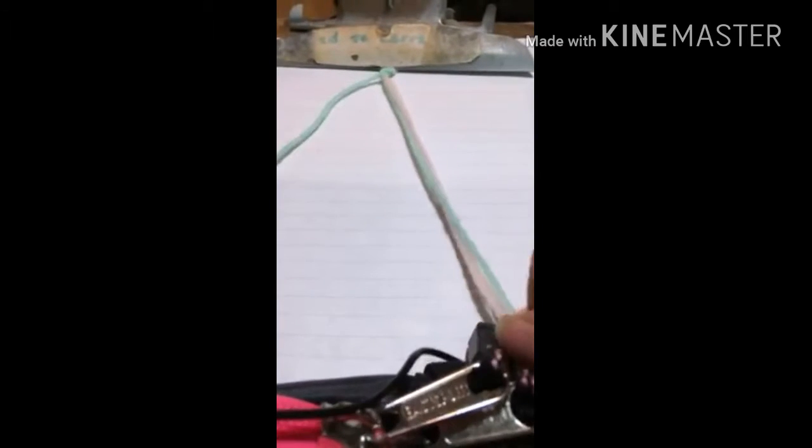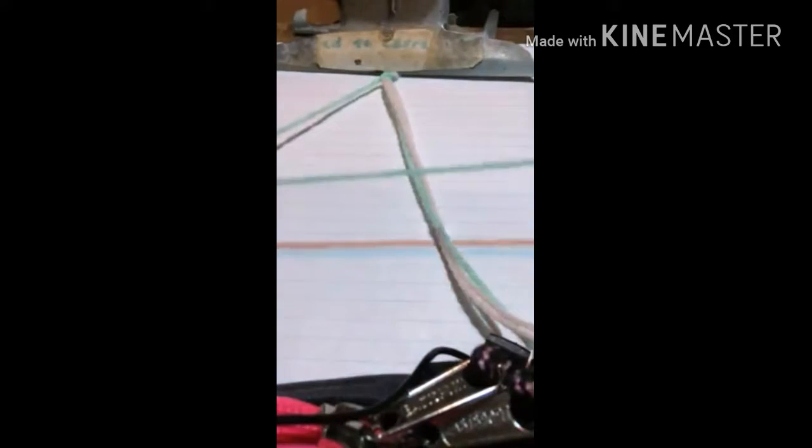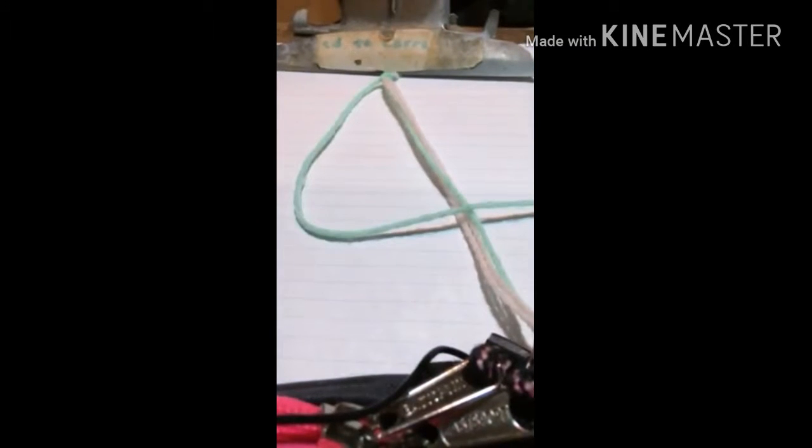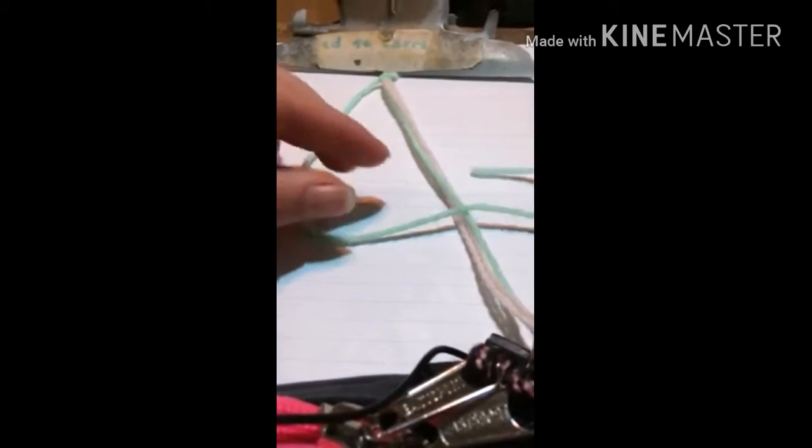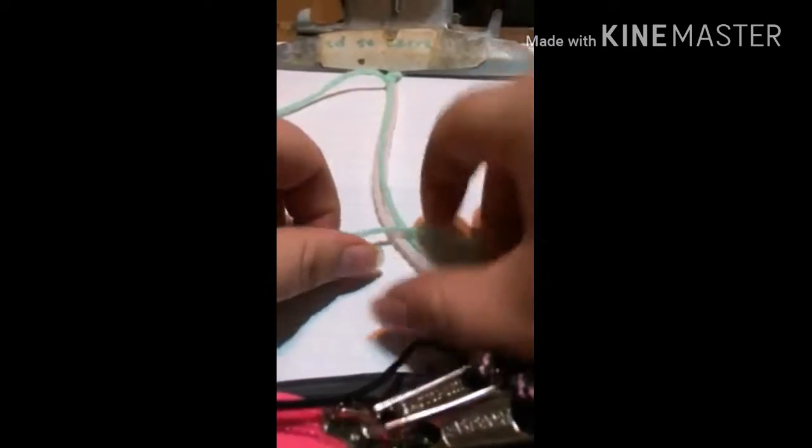If you want to do a front knot, you basically do the same. Make a four, take the end, slip it under, pull it through the loop. You can do that again. Okay, I'm going to speed this up for you and I'm going to show you the other color.